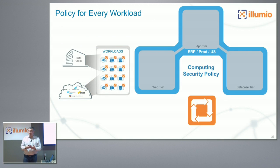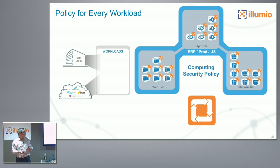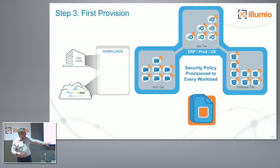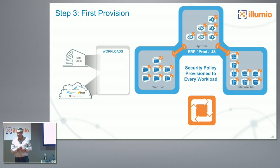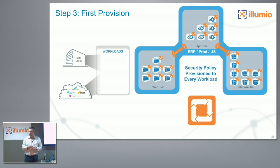These workloads are spun up, labeled, and the security model is applied. The PCE — the policy compute engine at the bottom — will provision all the necessary instructions based on the policy you wrote. There are actually two points of enforcement. When traffic leaves the web tier, there's an IP tables or WFP enforcement check to verify it's traveling to an app tier component. When it arrives at the app tier, it's checked to confirm it came from a valid web server.